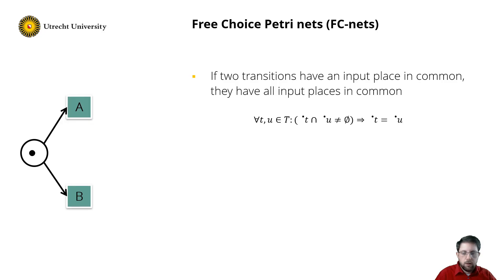So what does it mean? Consider the net on the left. Transitions A and B share a single place. To guide the firing of transition A, I could add a place like this. And now I can control when transition A is enabled by adding a token here.